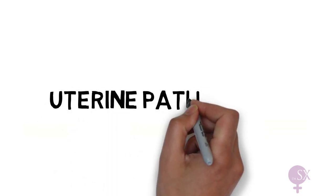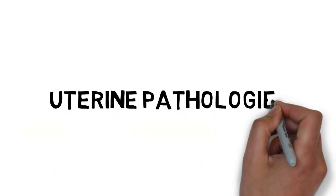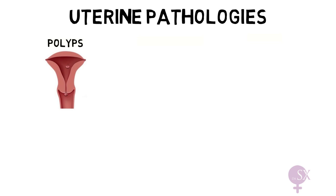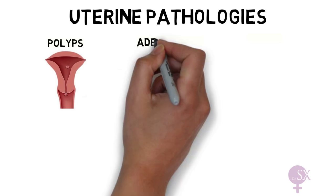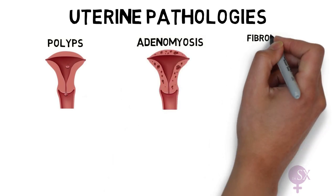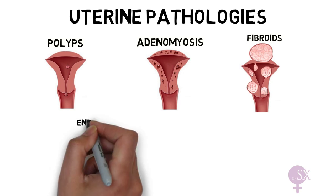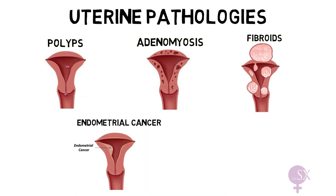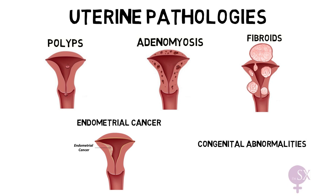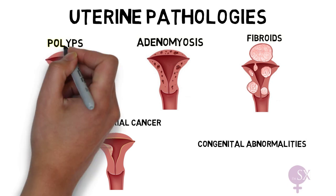In this video, I shall be discussing uterine pathologies. These are going to be split into a series of two videos. In this video, we are going to discuss polyps, adenomyosis, and fibroids. Next week, I shall be talking about endometrial cancer and congenital uterine anomalies. Starting off with polyps first.